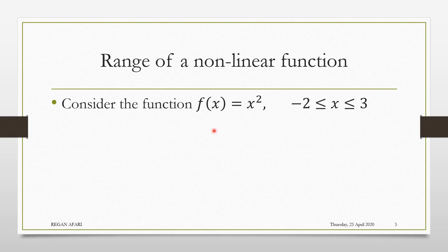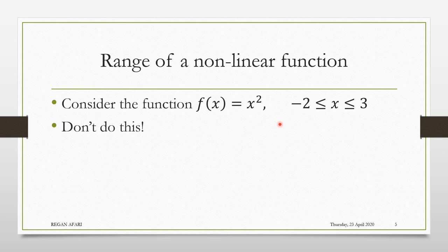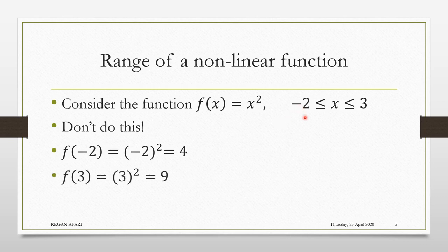Let's consider this example — x squared. This is a quadratic function, defined on this domain, and we are told to find the range. Now, don't just put the two extremities into the function and say that the range will lie between 4 and 9. Let's see why.